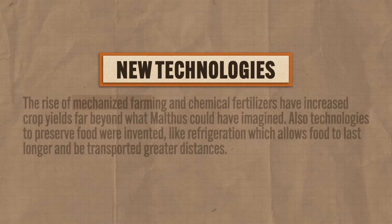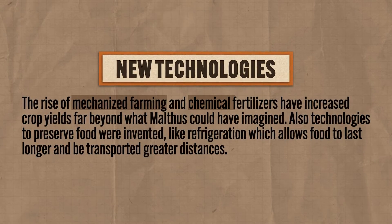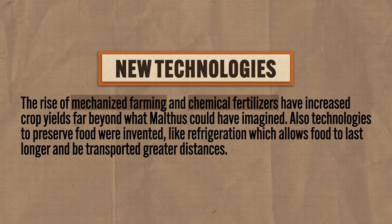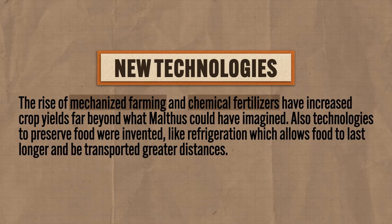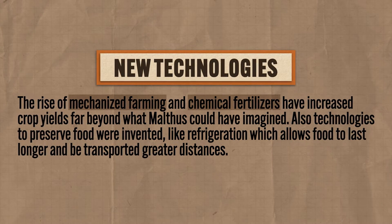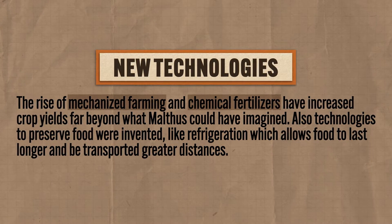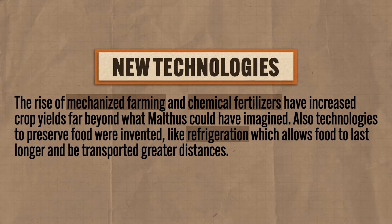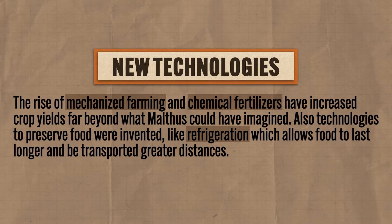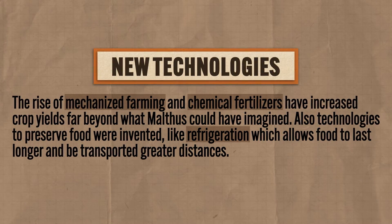For example, the rise of mechanized farming and chemical fertilizers have increased crop yields far beyond what Malthus could have imagined. Also, technologies to preserve food were invented, like refrigeration, which allows food to last longer and be transported at greater distances. And all that has meant that the food supply in general has kept up with population growth.